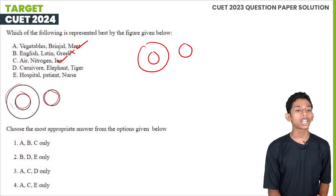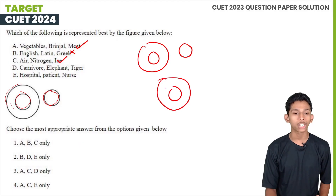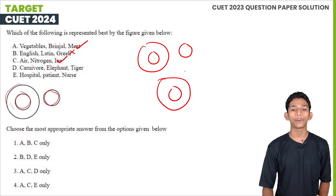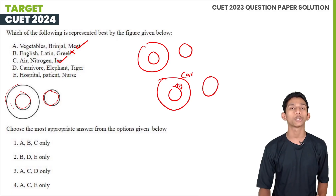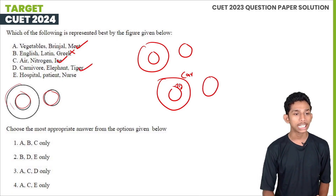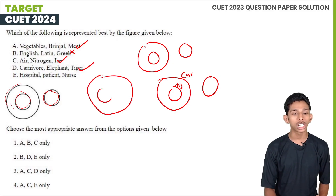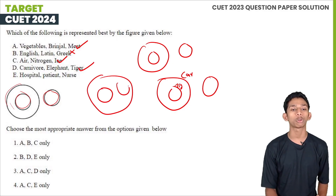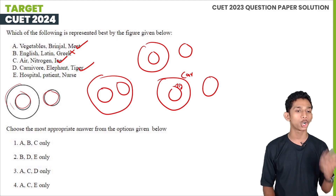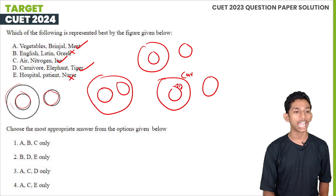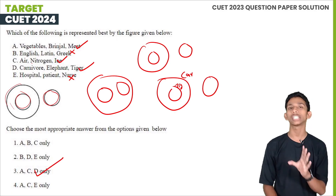Next: Carnivore, Elephant, and Tiger. A tiger is a carnivore, but an elephant is not — elephants are not carnivores. Next, if you use a patient in the hospital, that means our option is C. Options A, C, and D — that means option C.